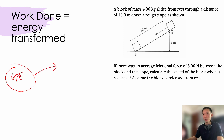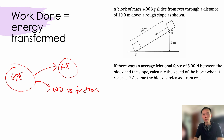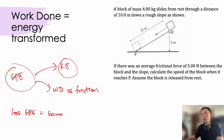The energy starts off all as GPE, and as the block slides down, this GPE is converted to KE. However, along the way the block also does work against friction, so not 100% of the GPE is converted to KE — some of it is used up to overcome friction. We call this work done against friction. Remembering the first key concept, work done always refers to energy converted, so work done against friction means some energy is converted to heat, which comes from the GPE.